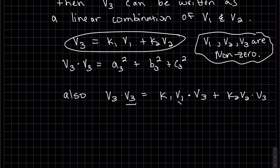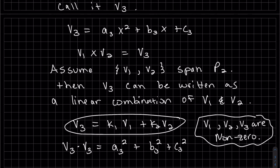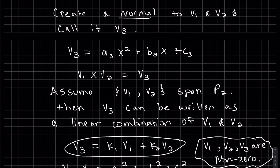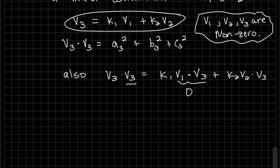That k can come out: k1 and k2. This is zero. Why is it zero? Because remember we created a normal to these. From calc 3, normals to them means the dot product is zero to each of them. v3 dot v1 is zero, v3 dot v2 is zero. So that's zero, this is zero equals zero.